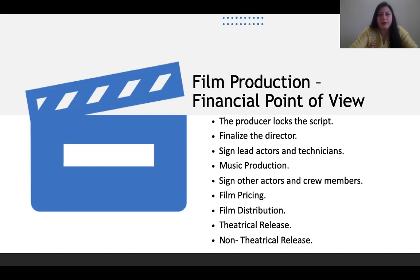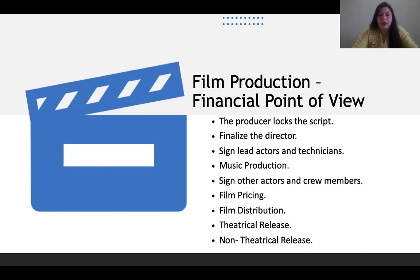In yesterday's video I talked about film budget and film pricing. Budget refers to the money spent on the production process, but film pricing includes all kinds of rights — distribution rights, satellite rights, and similar rights. A certain price is fixed for the film, and at that point certain funds are also released. Then during the film distribution process, we focus on theatrical and non-theatrical release.